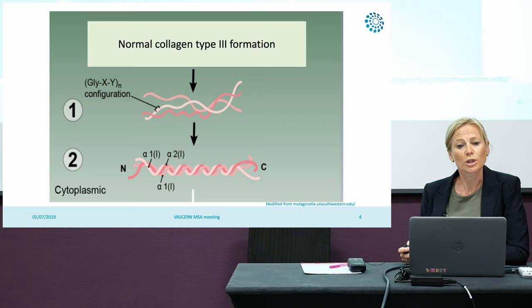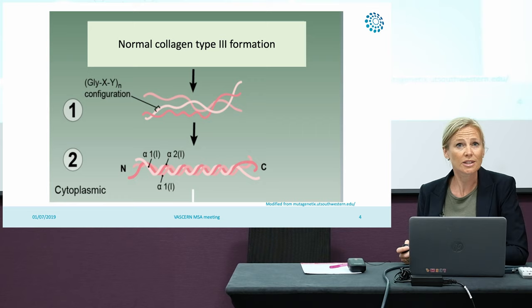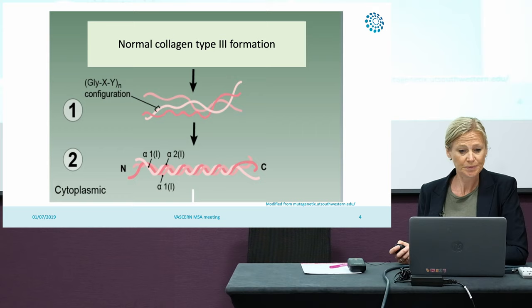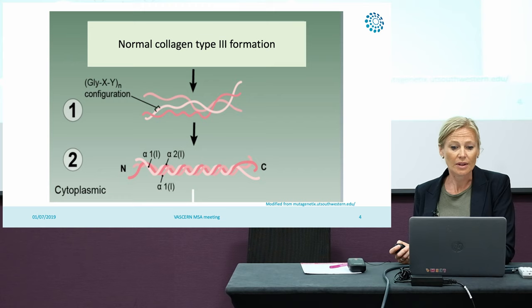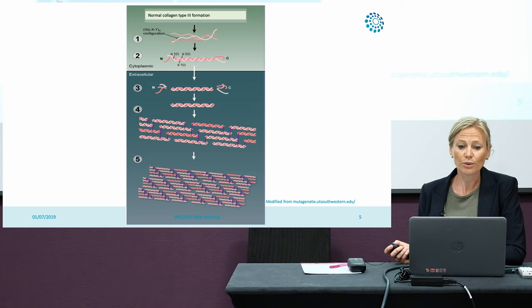Each of these alpha 1 chains consists of a motif formed by three amino acids. The first one is usually a glycine, and then an X and Y amino acid — quite often a proline or hydroxyproline on the X and Y position — and these glycines form this triple helix. There's an N-terminal end and a C-terminal end, and this pro-collagen molecule is processed in the extracellular part of the cell.